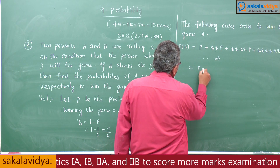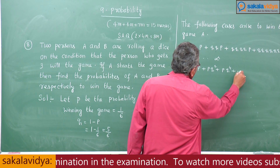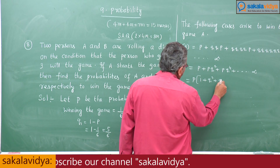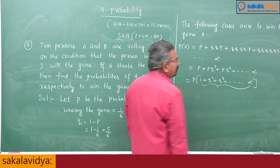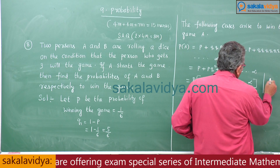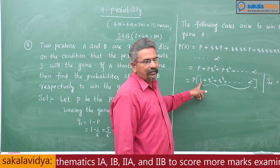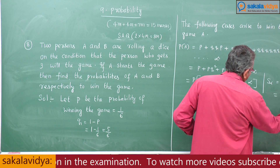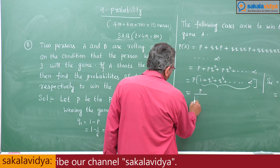The probability of A winning can be written as P plus P·Q squared plus P·Q to the power 4 and so on to infinity. Taking P common, we get 1 plus Q squared plus Q to the power 4 plus ... to infinity. This is an infinite geometric series. Using the sum-to-infinity formula A by 1 minus R, with A equals 1 and R equals Q squared, we get 1 by 1 minus Q squared. So P of A equals P by 1 minus Q squared.